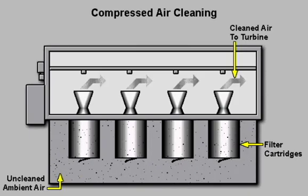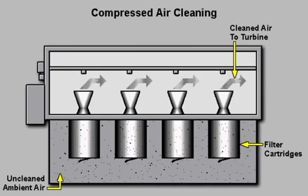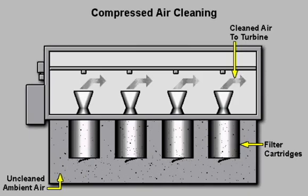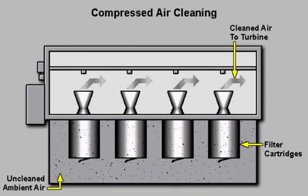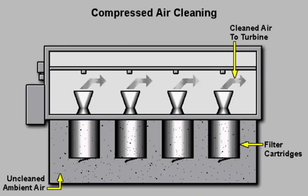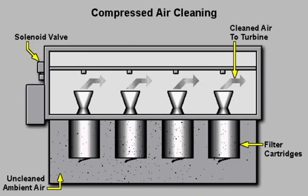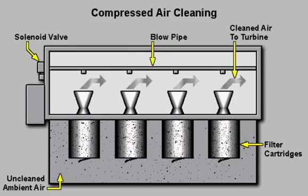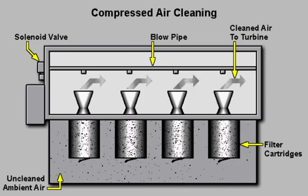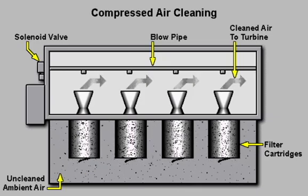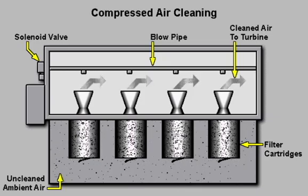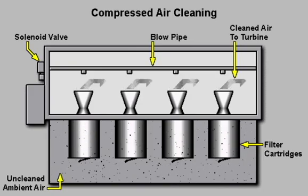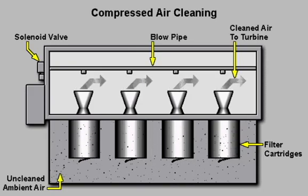When the control system senses that the self-cleaning filters are dirty, compressed air is delivered to the filters through a solenoid valve and blowpipe. A pulse of compressed air flows in a reverse direction through each filter and dislodges any dust adhering to the filter's surface.